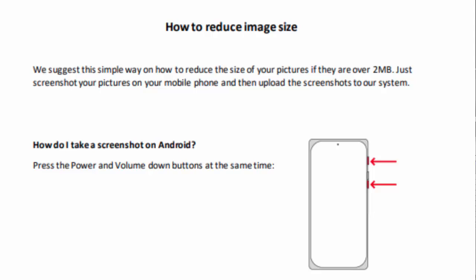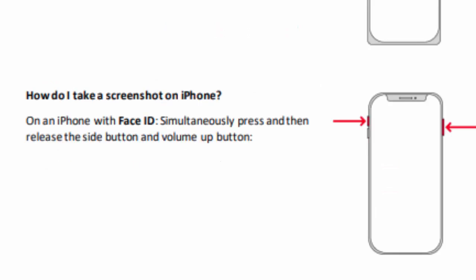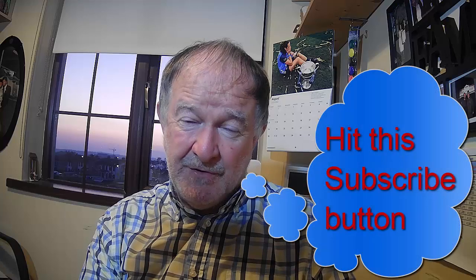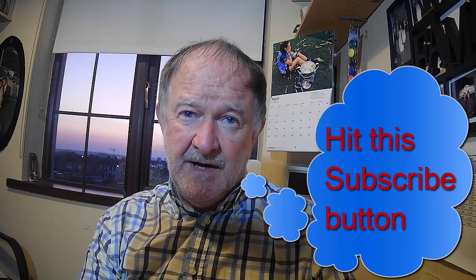How do I take a screenshot on Android? Press the power and volume buttons at the same time. How do I take a screenshot on an iPhone? On an iPhone with Face ID, simultaneously press and then release the side button and volume up button. On an iPhone with a home button, simultaneously press and then release the home button and the side button or sleep/wake button, depending on your model. Alternatively, you can search the web for apps to reduce image size.